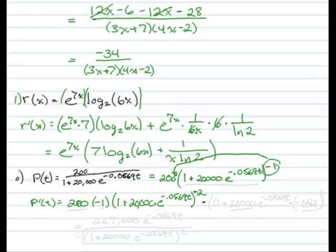Now we have to multiply by the derivative of the inside. The derivative of 1 is 0 plus, now the derivative of this part is exponential, so it's going to be 20,000. It's going to have itself in it, e to the negative 0.0569t, times the derivative of the exponent, so times negative 0.0569t. And we now have our derivative.